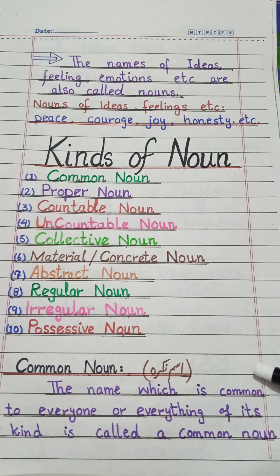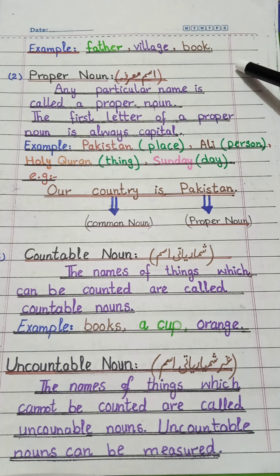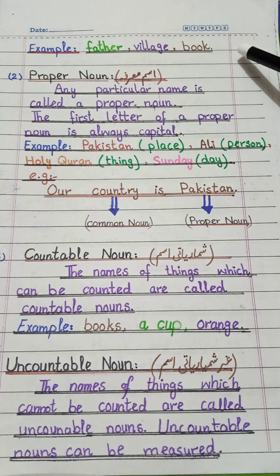The name which is common to everyone or everything of its kind is called a common noun. For example: father, village, book. These words are common for everyone — we don't know which specific book, or whose father. Father could be Ali's father or Usman's father. There is no specific name. Where we use a specific name, that becomes a proper noun. Common nouns are the same for everyone.